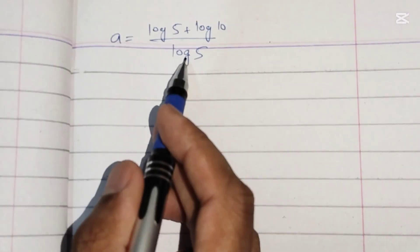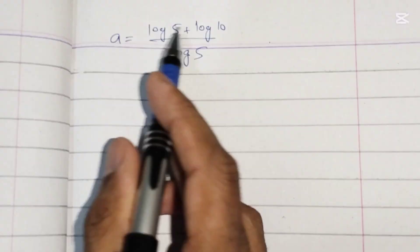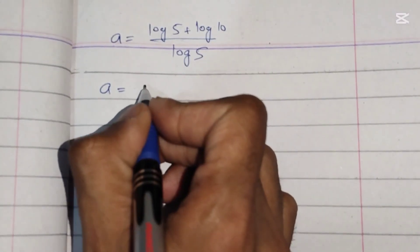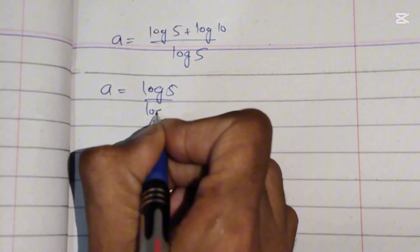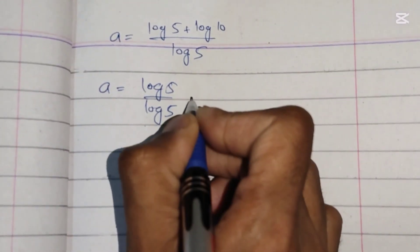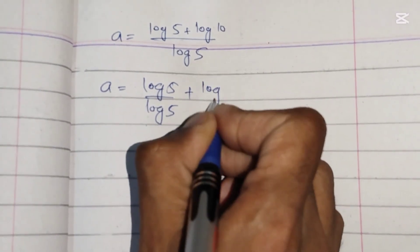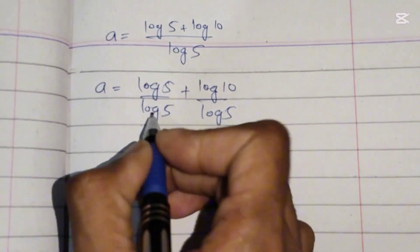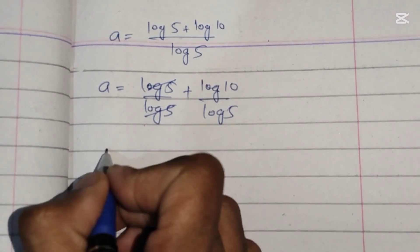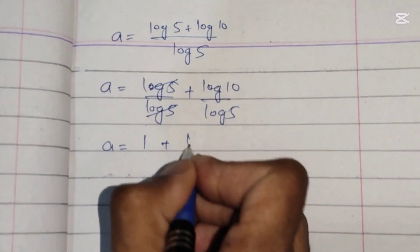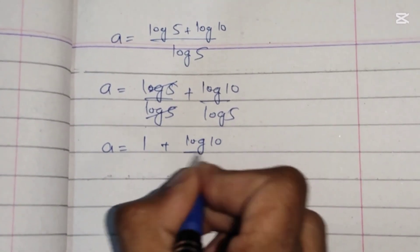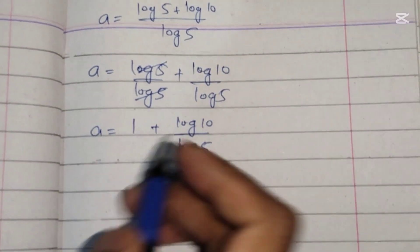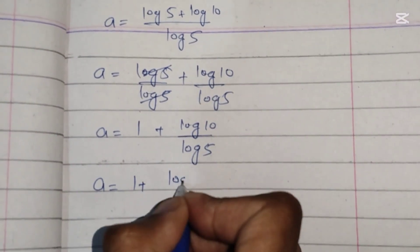Now we will separately divide log of 5 into both terms in the numerator. So it will be a equals log of 5 over log of 5 plus log of 10 over log of 5. Log of 5 cancels with log of 5, so a equals 1 plus log of 10 over log of 5. Now we can write 10 as...